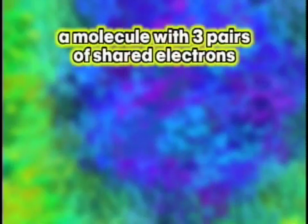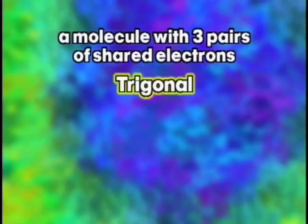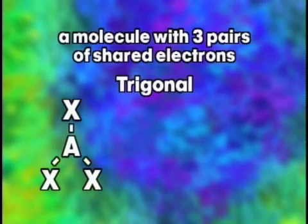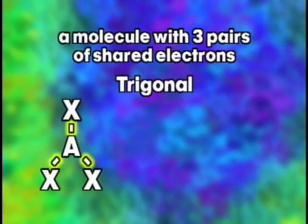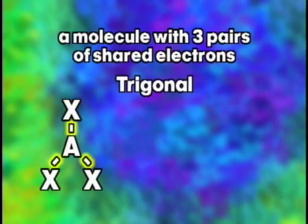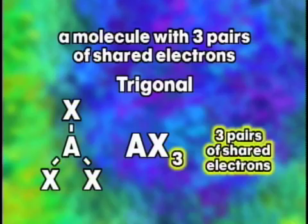A molecule with three pairs of shared electrons is called trigonal. Here's a picture of what the VSEPR theory says it looks like. Trigonal molecules — those that have three pairs of shared electrons — are represented by the notation AX₃. The sub 3 tells you that the molecule has three pairs of shared electrons.